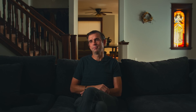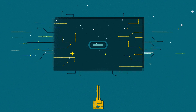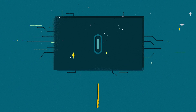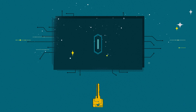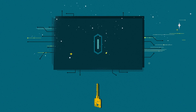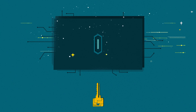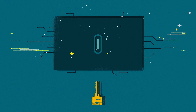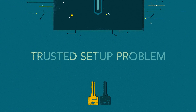When launching Zcash, developers create a special key that is used to lock the code that runs the currency. With the code locked, no one can generate any counterfeit transactions. But there's a catch: users would have to trust that the developer who locked the code also destroyed their copy of the key, and that no one else duplicated the key. This issue became known as the trusted setup problem.